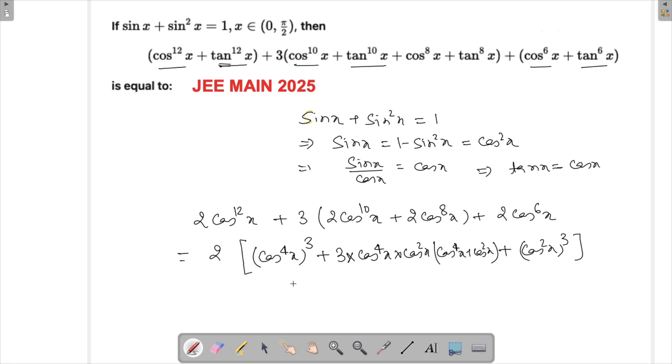I have taken 2 common already, 2 is out here. So what is this looking like? This is looking like 3ab, a plus b, a plus b, and this is looking like b cubed.